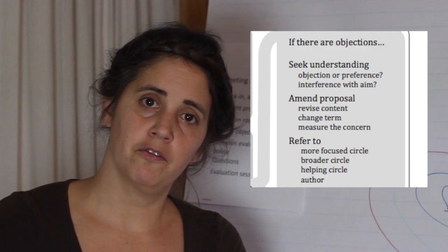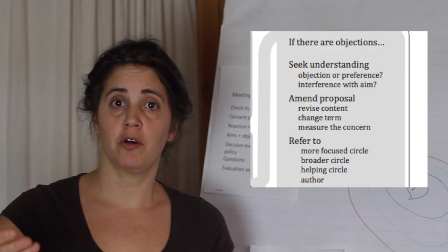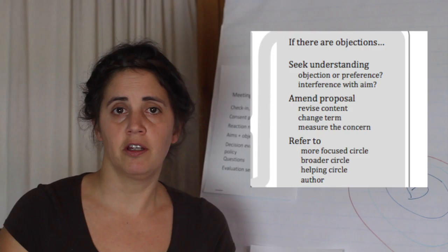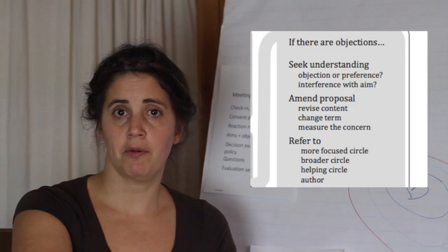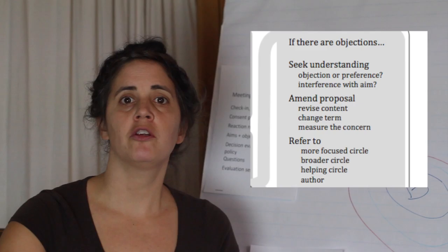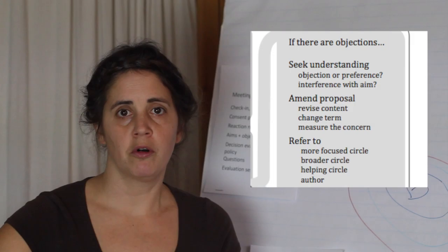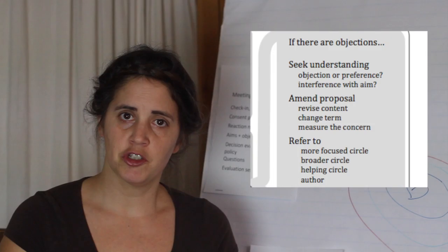Another way of dealing with an objection is to refer to a different circle. Typically the decision would still live in your circle — you're only getting input from a different circle. You could refer to the next broader circle to get some input. You could also refer to a helping circle, which is basically an ad-hoc group — instead of the whole circle dealing with something, send two or three people, get some outside expertise. Anything you can do so your group can make a next step and get the information you need. You don't want to get stuck as a circle. Always think about what you can do so next time you're in a better position to work towards a decision. You can also refer to the author, especially if it simply needs more work and you don't want to deal with it in the large circle.